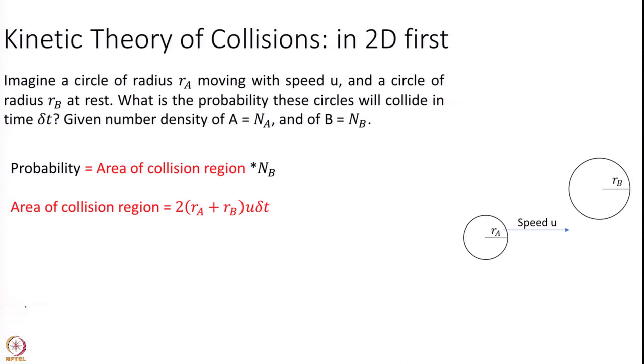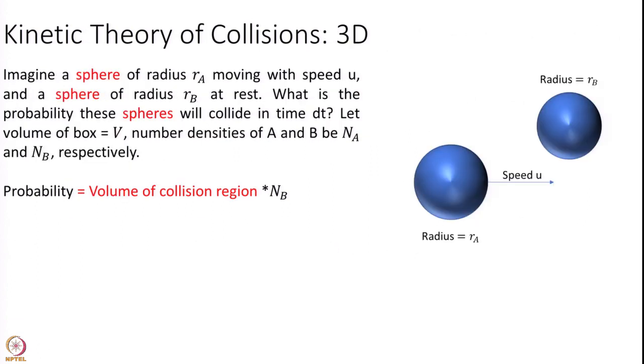I have found the area of collision region which is 2 into (Ra + Rb) into u delta t. Now I can get the probability delta t equal to 2(Ra + Rb)U Nb delta t. That was 2D. That was just so that we have an understanding of how to calculate these areas and build a basic picture. Reality is in 3D.